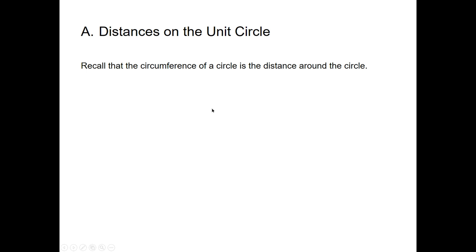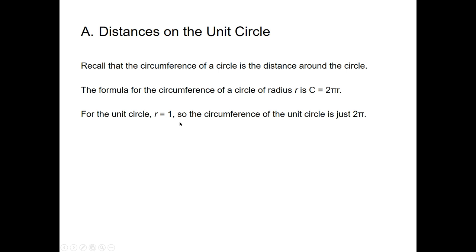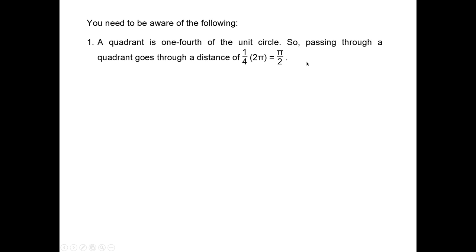Distances on the unit circle: the circumference of a circle is the distance around it — for circles this is called circumference rather than perimeter. The formula is C equals 2πr. For the unit circle, r is 1, so the circumference is just 2π. If you go once around the unit circle starting at (1, 0) and ending at (1, 0), you travel a distance of 2π units.